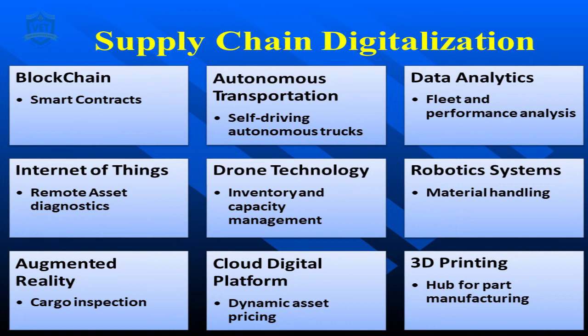Supply chain digitization is very important in the pandemic situation. Blockchain manages smart contracts and enables secure transactions. Autonomous self-driving trucks, analytics, IoT, and drone technology are emerging. Drones will handle material handling, inventory monitoring, and shelf tracking. Robot process automation and augmented reality and virtual reality enable customers to plan their product purchases. Cloud and digital platforms and 3D printing are all part of supply chain digitization as part of supply chain 4.0.